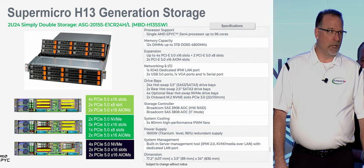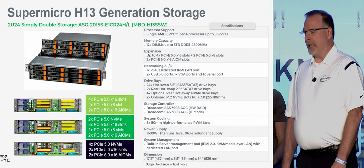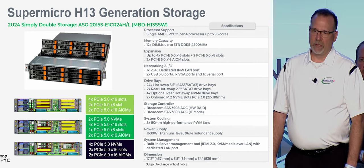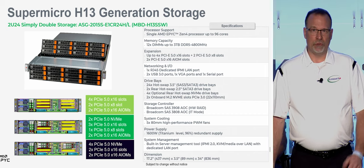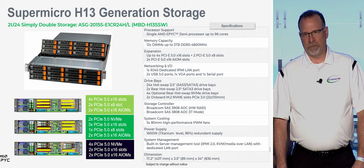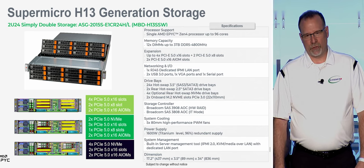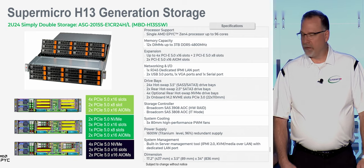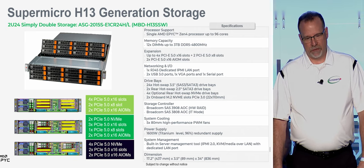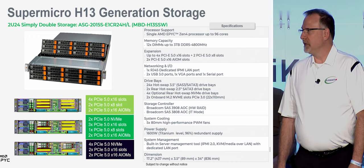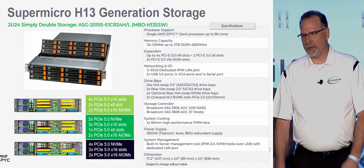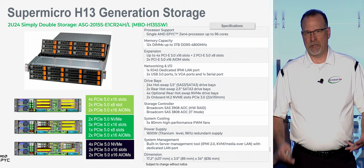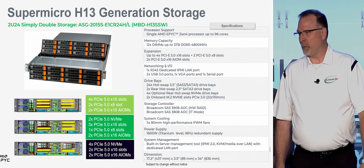We are introducing what we call our Simply Double — an AMD 2U system with the ability to have 24 3.5-inch drives. That is a lot of storage in a 2U option, with variety of rear options including NVMe in the rear for additional caching for the 3.5-inch drives, as well as flexible PCIe slots. This is a very popular box with storage providers we work with because of the density — having that many 3.5-inch drives as well as the ability to support NVMe in a 2U system.